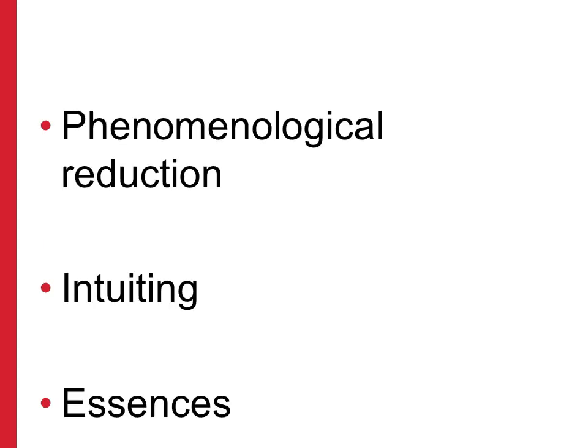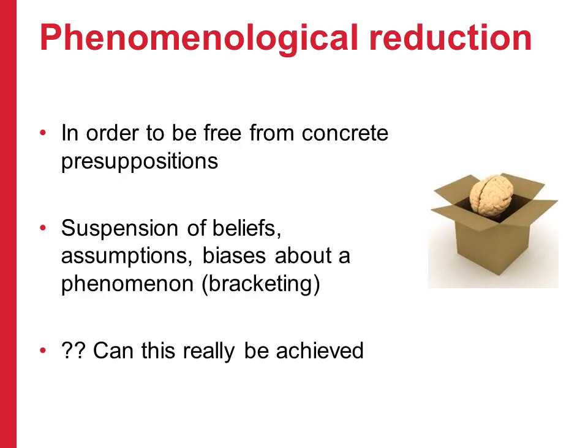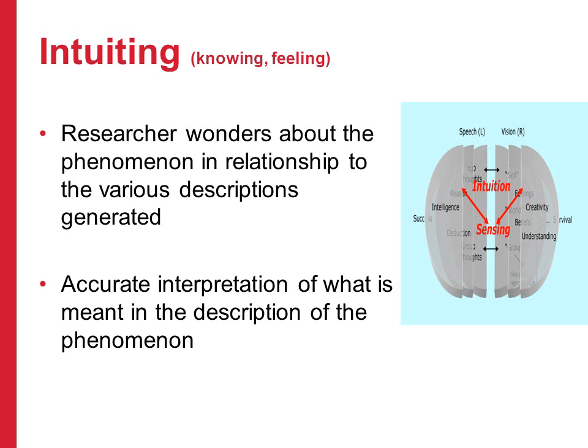Some terms you may come across in your additional reading on Phenomenology are essences, Phenomenological Reduction, and Intuiting. Phenomenological Reduction is a strategy that the researcher engages in to be free from concrete presuppositions — this involves the suspension of beliefs, assumptions, and biases about the phenomena, and the term bracketing is sometimes used for this. To what extent do you feel that this can really be achieved? Intuiting refers to the process the researcher engages in when they wonder about the phenomena in relationship to the various descriptions generated through the research.